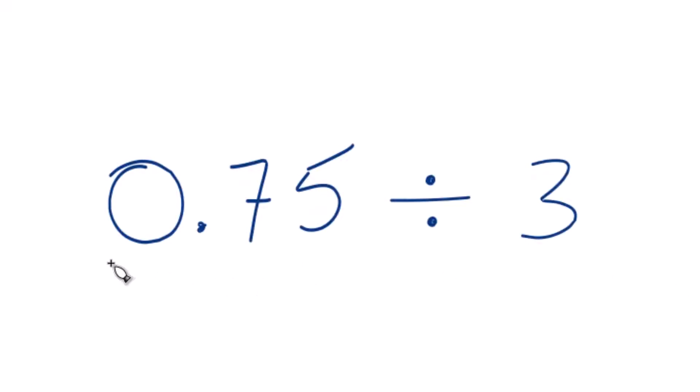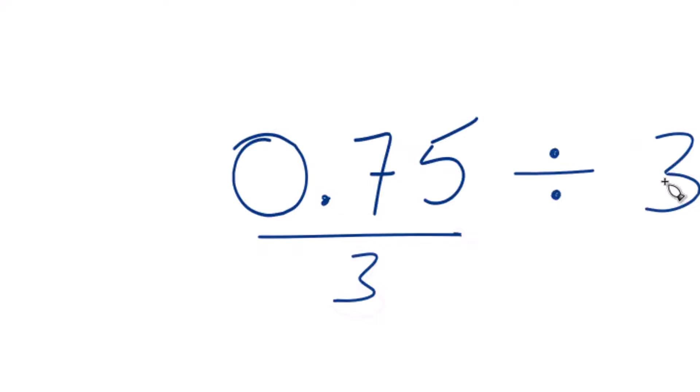So let's divide the decimal 0.75 by 3. You can think of this as 0.75 over 3. That's one way to think about it. But really what we want to do is see how many times 3 goes into 0.75.